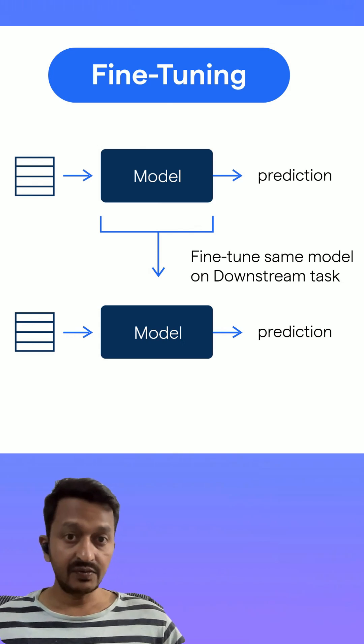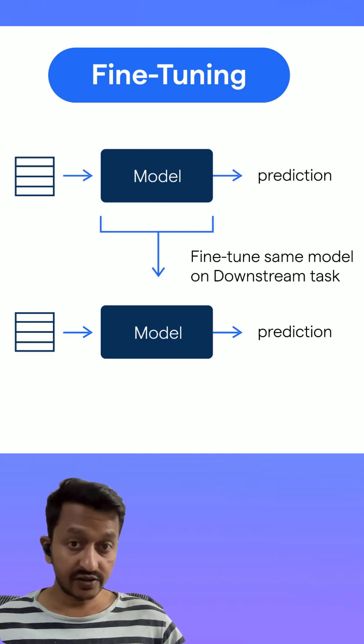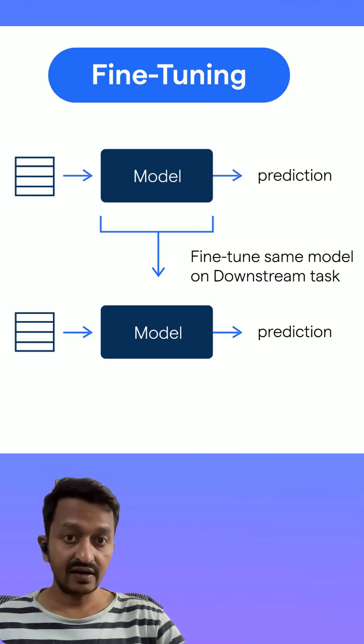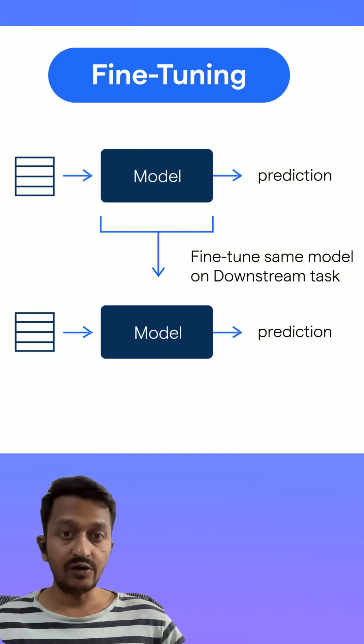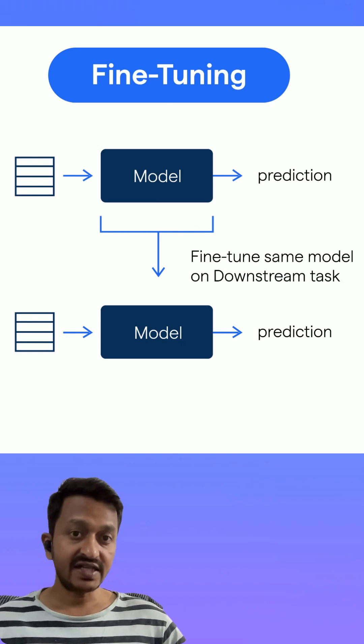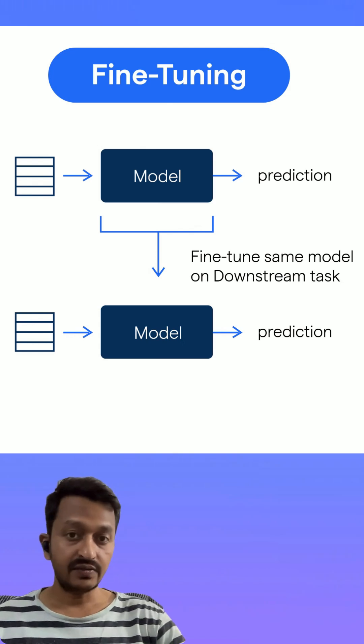Step three: the LLM learns the specific patterns, terminology, and nuances of that field. It's like taking a general knowledge student and putting them through medical school. They don't forget everything else; they just become an expert in one particular area.